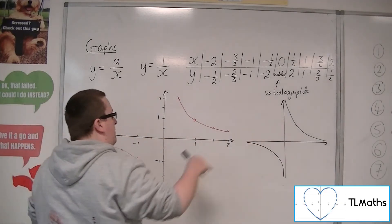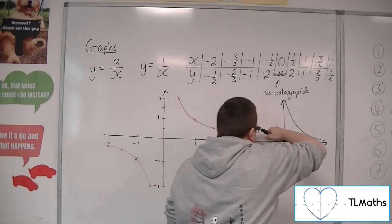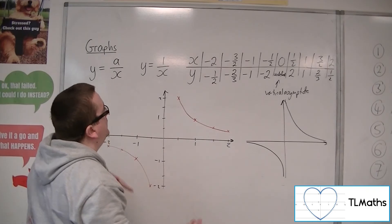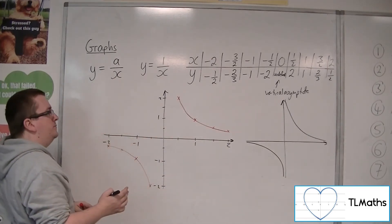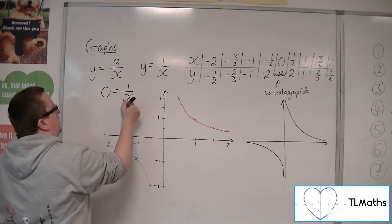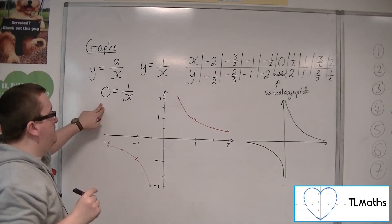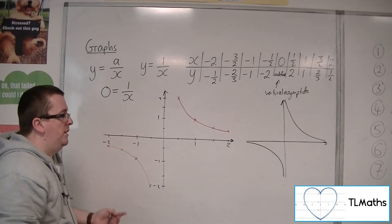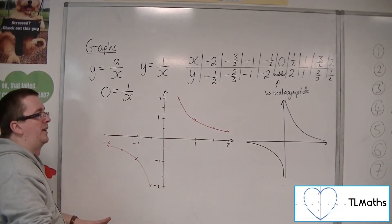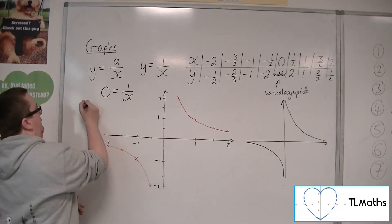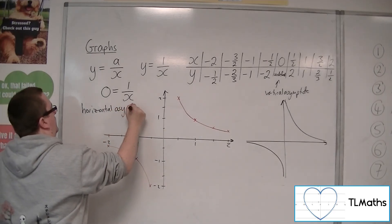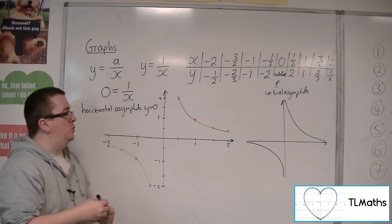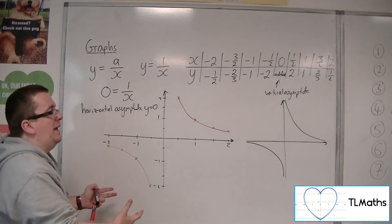As you travel further away from the y-axis, the curve goes down and gets shallower and shallower, getting closer and closer to the x-axis. It never quite reaches the x-axis because y can never equal 0 — there's no value of x I can substitute to get 0. I can substitute in a million, a billion, a trillion, but it won't ever equal 0. So the curve gets closer and closer but never touches the x-axis, giving us a horizontal asymptote at y equals 0.